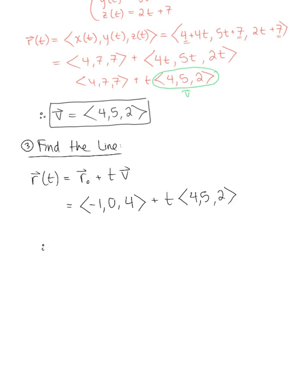And then simplifying this with some vector arithmetic, we're left with a beautiful final answer. Vector r(t) is equal to (-1 + 4t, 5t, 4 + 2t). The x component is -1 + 4t, our y component would be 0 + 5t or just 5t, and our z component would be 4 + 2t. And this is for that arbitrary parameter t. So this is our beautiful final answer.